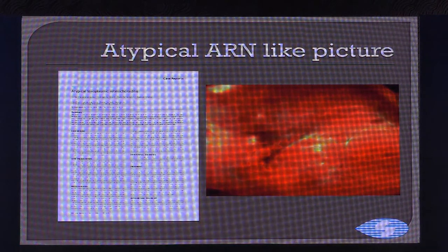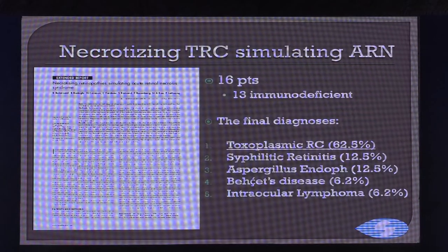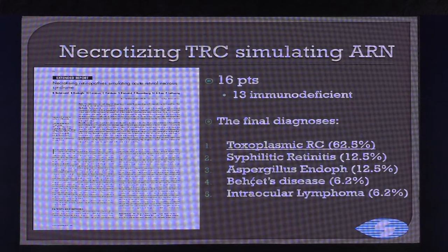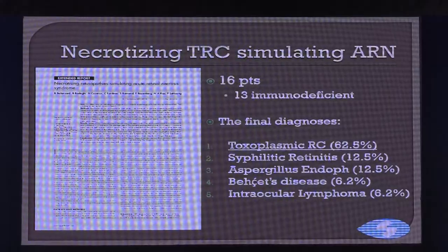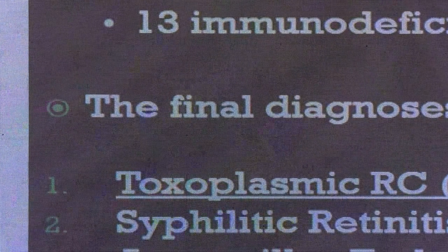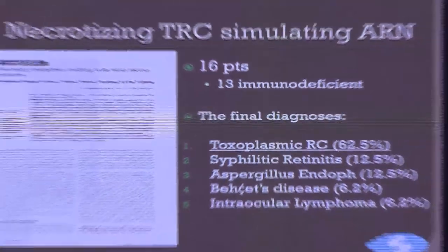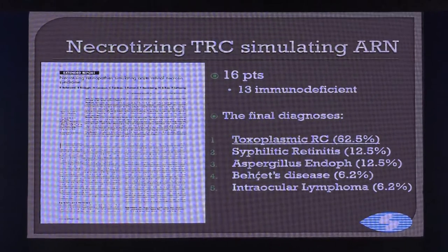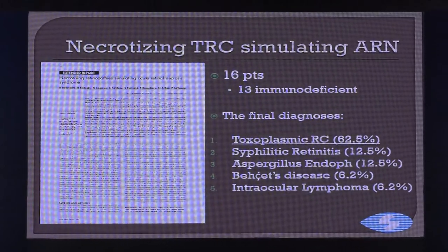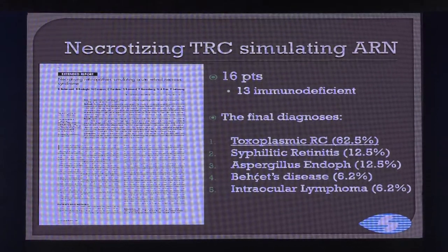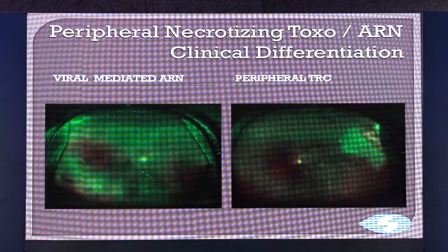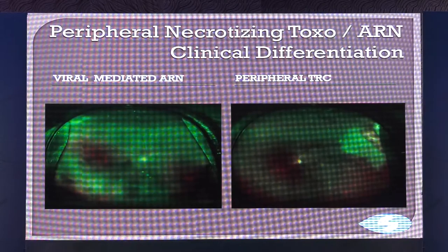When there is an atypical acute retinal necrosis, acute retinal necrosis as well as toxoplasmic retinochoroiditis becomes a differential diagnosis. There is a published paper with 16 patients who are immunodeficient, showing that an ARN-like picture can occur not only with viral disease but also with toxoplasmosis, syphilis, aspergillosis, Behçet's disease, and intraocular lymphoma. In this example, you have one side with ARN and the other with atypical toxoplasmosis.